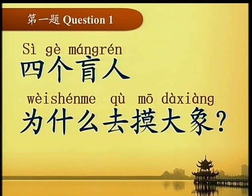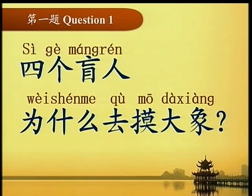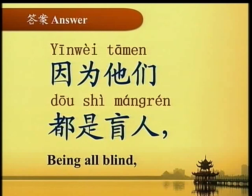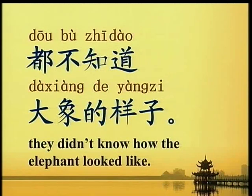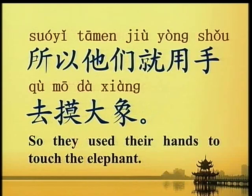练习 为什么四个盲人去摸大象？ Why did the four blind men touch the elephant? 答案：因为他们都是盲人，都不知道大象的样子，所以他们就用手去摸大象。 Because all of them were blind and didn't know how the elephant looked like, so they used their hands to touch the elephant.